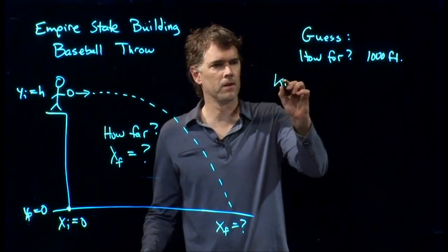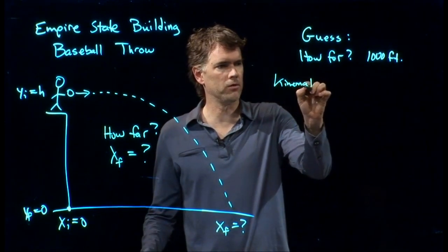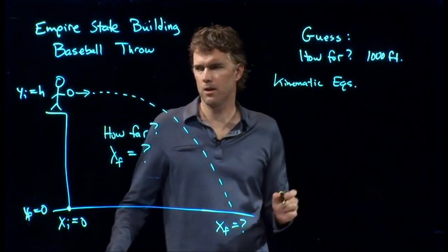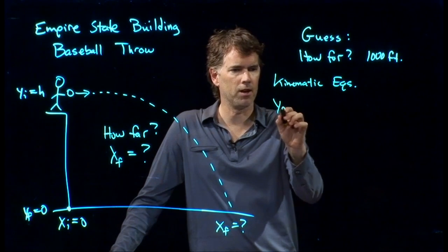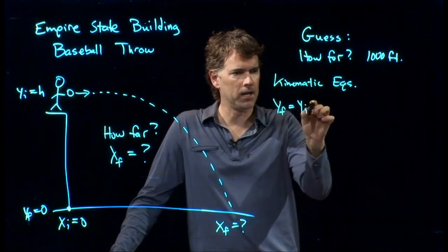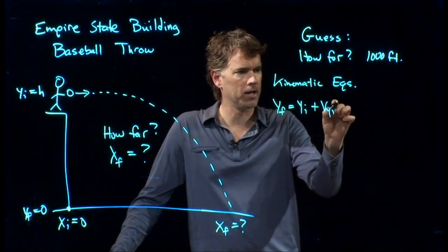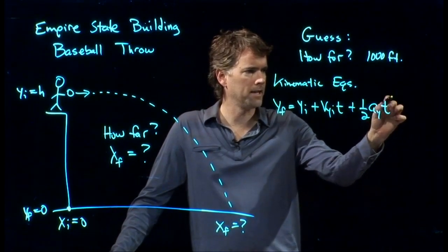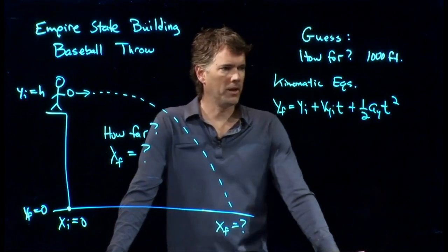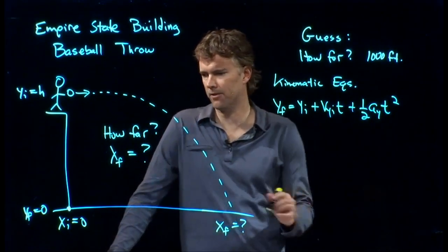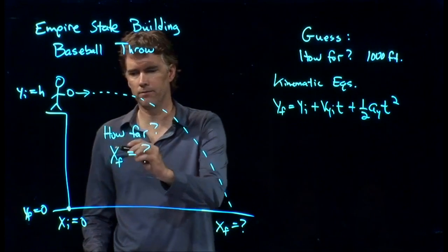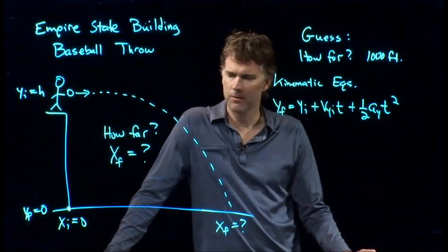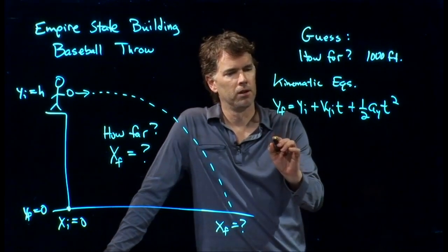What we said last time was the kinematic equations apply, and we can write down equations like this. Y final equals Y initial plus V Y initial times T plus one-half A Y T squared. Okay, that one looks pretty good, but that doesn't have an X final in it. That only has Y's in it. So that probably is not going to help us.